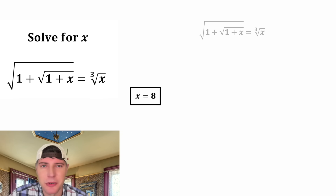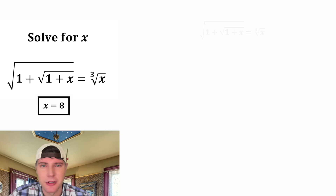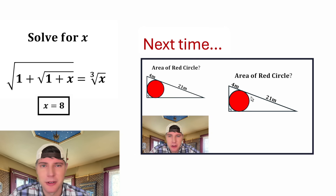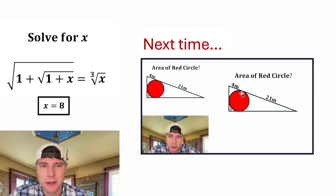Here's a sneak preview for the next episode. We're given a right triangle with an inscribed circle, and it wants to know what is the area of the red circle. We're also given that one portion of the hypotenuse is equal to 4 meters and the other portion is equal to 21 meters. If you want to try it on your own, pause it right now, because I'm going to solve it in 3, 2, 1.